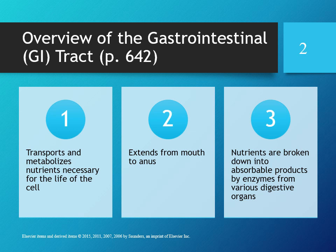The GI tract extends from the mouth to the anus — one long tube. Nutrients are broken down into absorbable products by enzymes from various digestive glands. Big sugars get broken down into glucose, big proteins into amino acids, and fats into fatty acids, which are distributed to the different tissues. The primary source of ATP is glucose, then fat, and in deprivation the body uses amino acids — though fats and amino acids are considered dirty fuels.